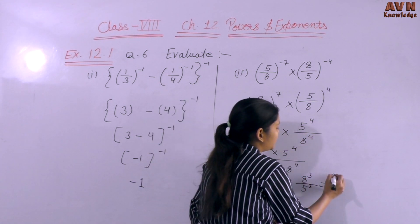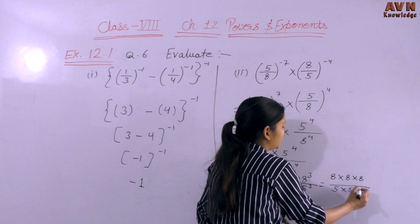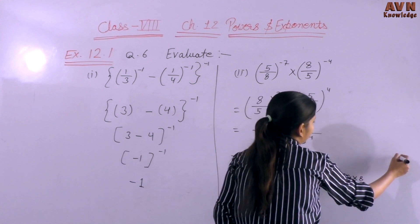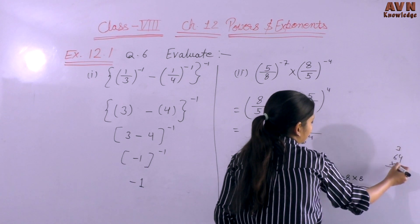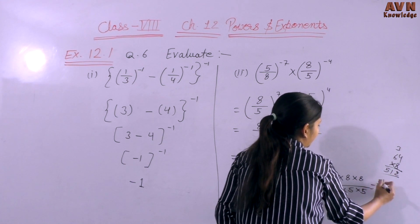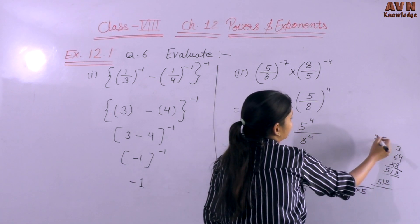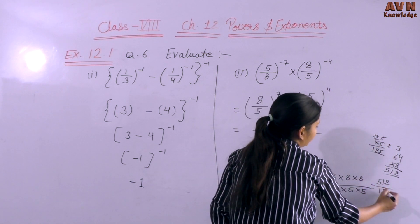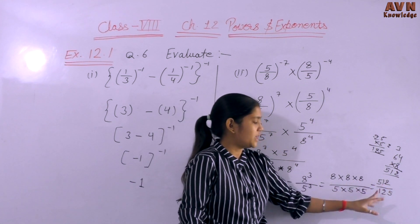So we have 8^3 divided by 5^3. 8^3 = 8 × 8 × 8 = 512. 5^3 = 5 × 5 × 5 = 125. So the answer is 512 divided by 125. Now come to the next question.